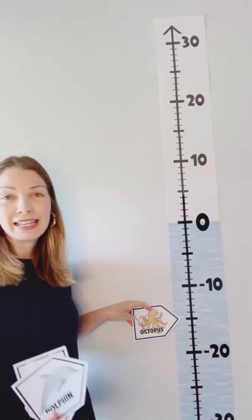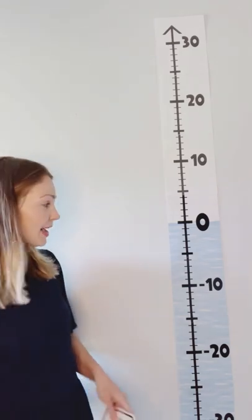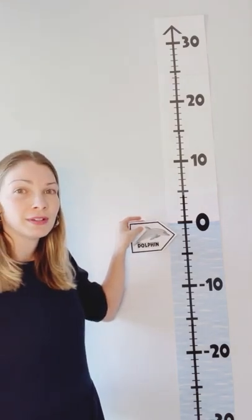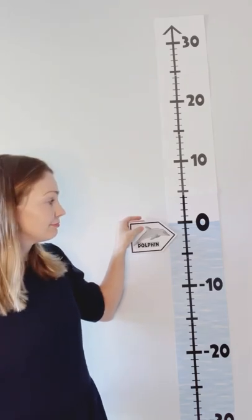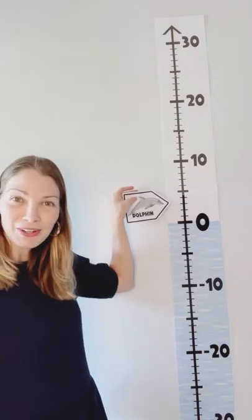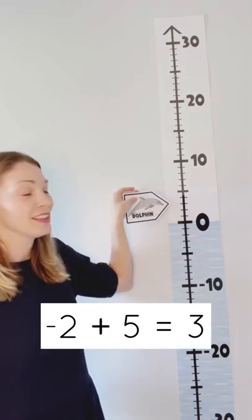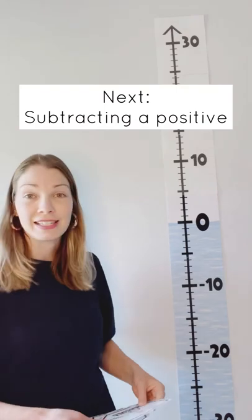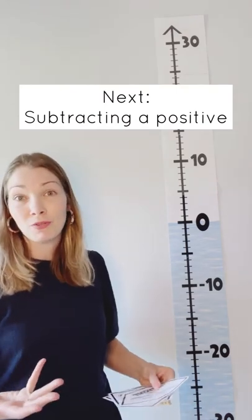Students are getting this image in their mind of moving up and down a number line — when you add, you move up. If we have a dolphin at negative 2 meters below sea level and he increases in elevation by 5 meters, now he's at 3 meters above sea level — he must be jumping out of the water! Anytime we're adding a positive, we're moving up the number line. Then we can move on to subtracting a positive, which is the next very intuitive move to make on a number line.